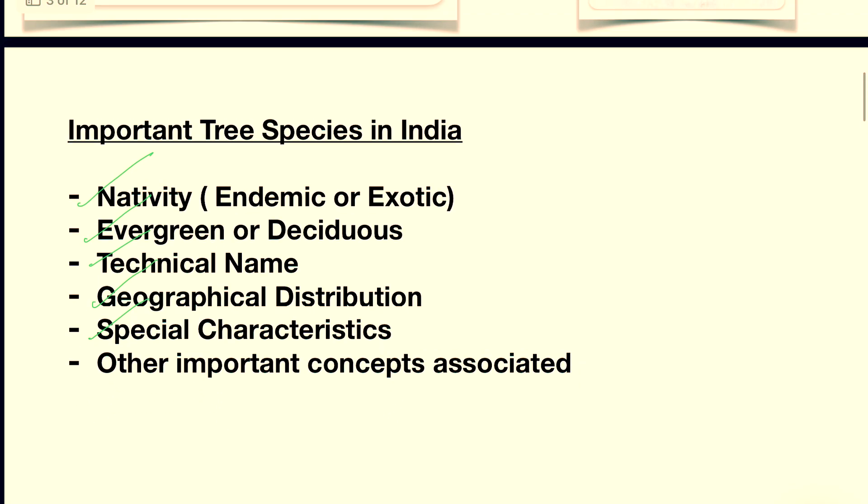Seeing the trend, what I can say is that they are asking about nativity — whether the tree is native, endemic, or exotic — whether the tree is evergreen or deciduous, the typical name of the tree, its special characteristics, and also its geographical distribution. In today's class, based on these PYQs, I have made a table on these aspects for 15 important tree species in our country.